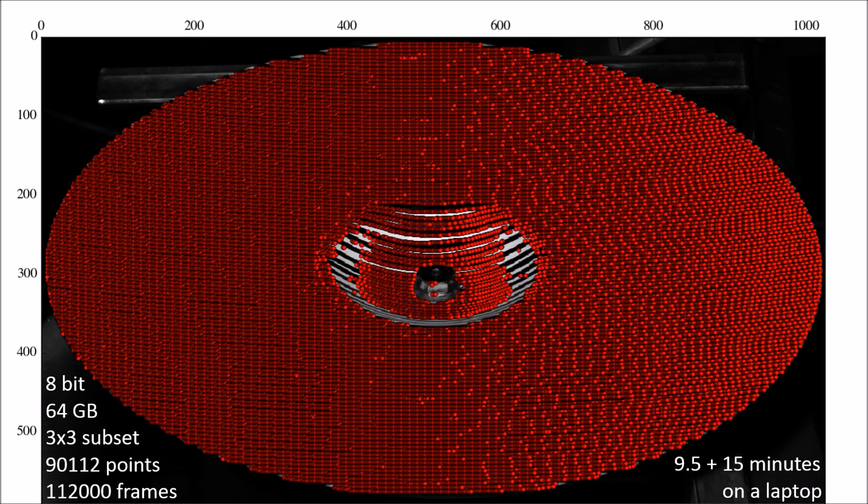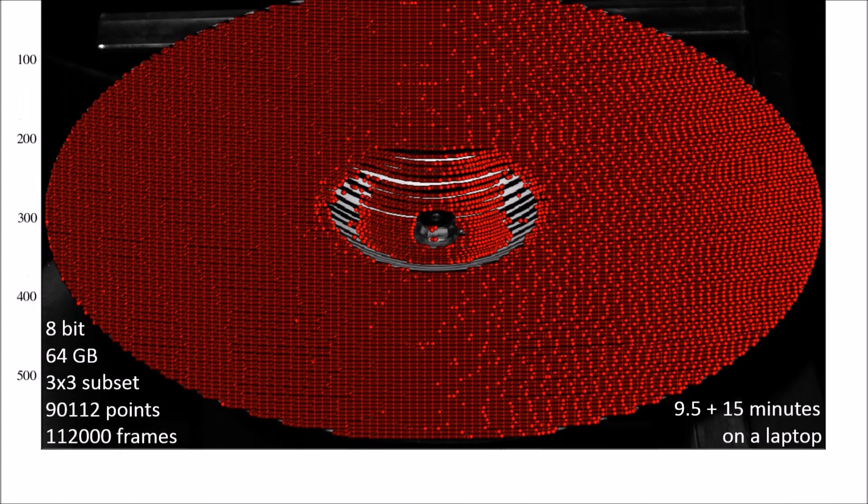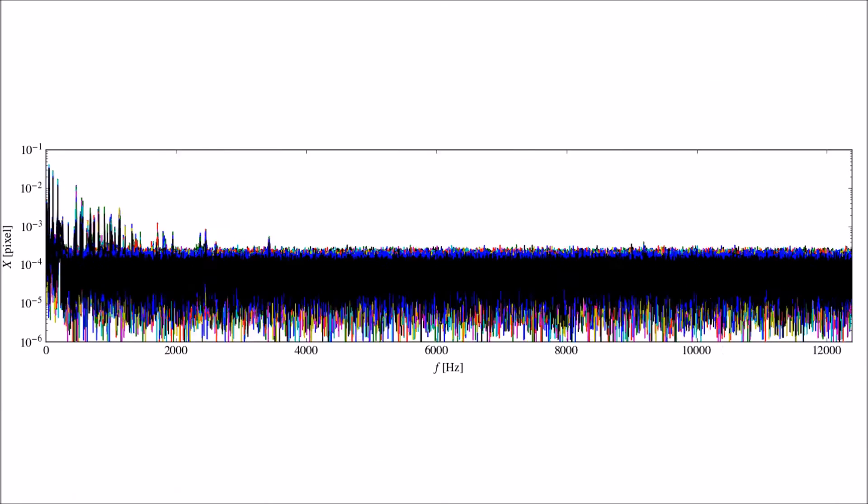The displacement identification took 9.5 minutes on a laptop computer and additional 15 minutes were taken by the Fourier transform that produced the spectral information.